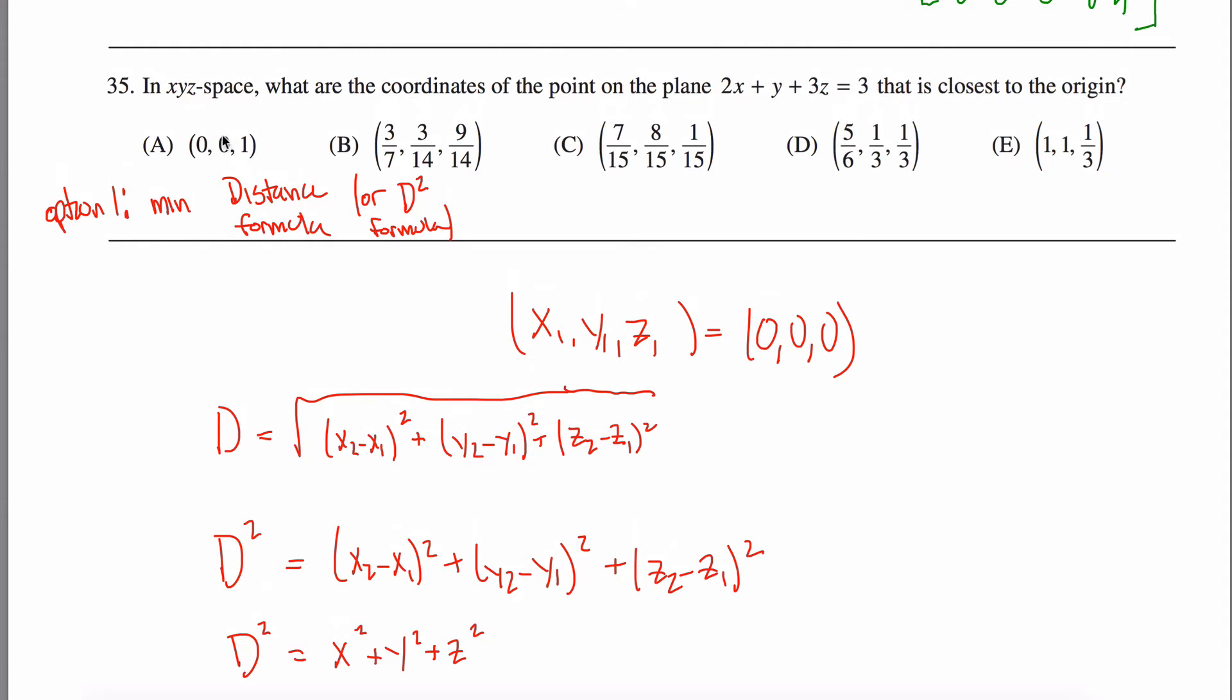So any answer that will give me a distance squared greater than 1, like this guy for example, can't possibly be the right answer. Are these guys going to end up being greater than 1? I don't know.